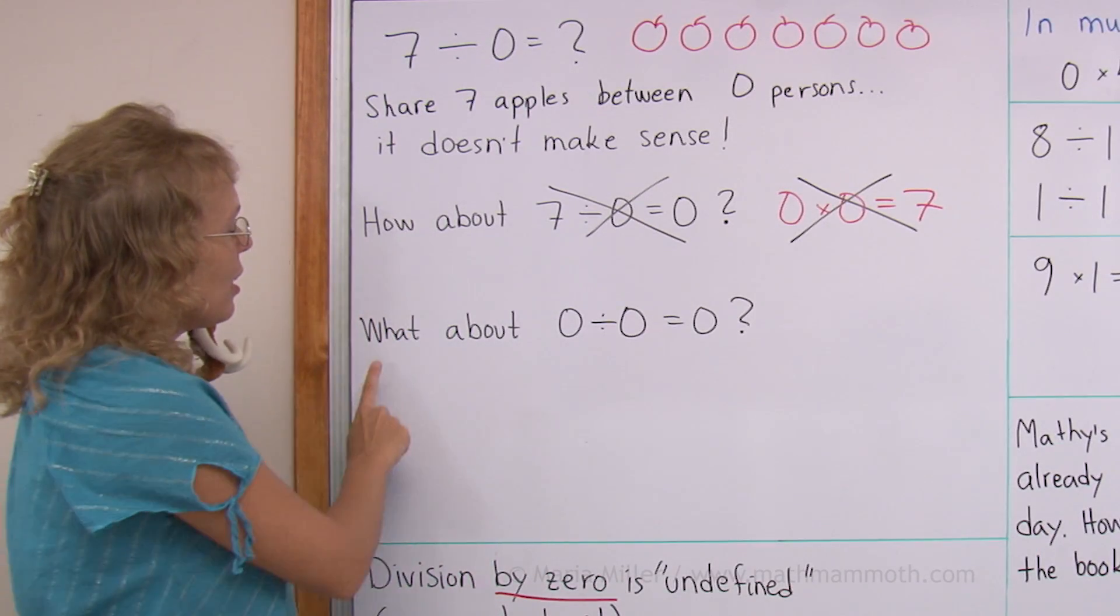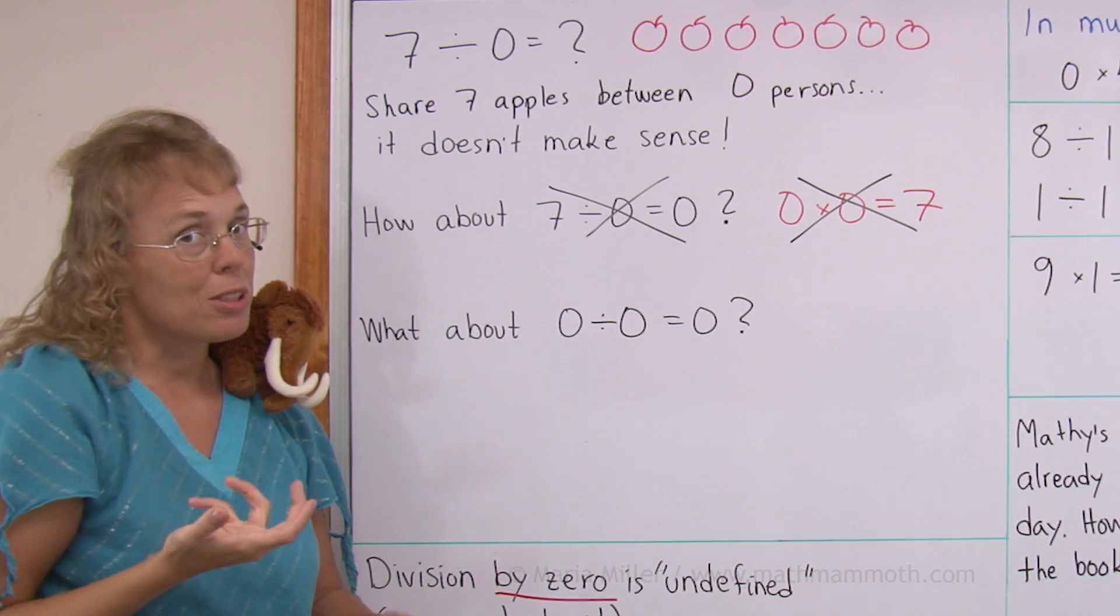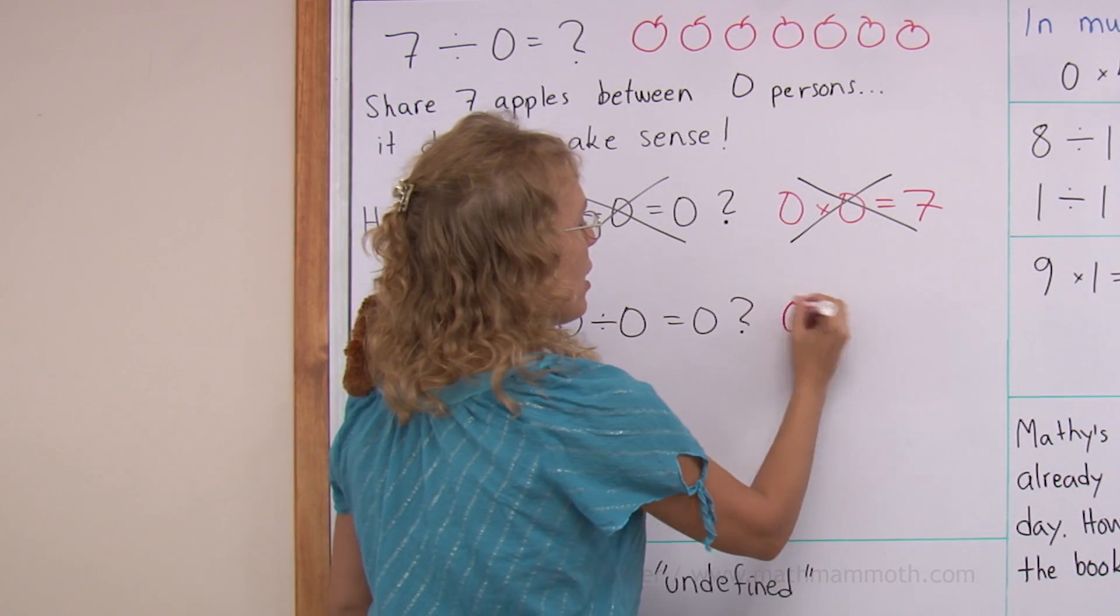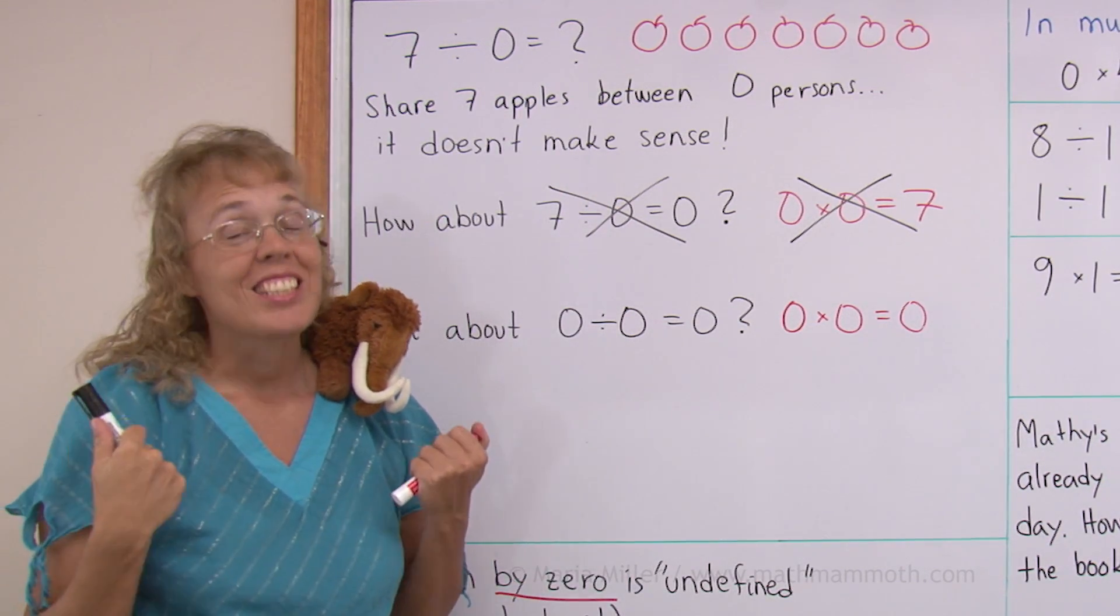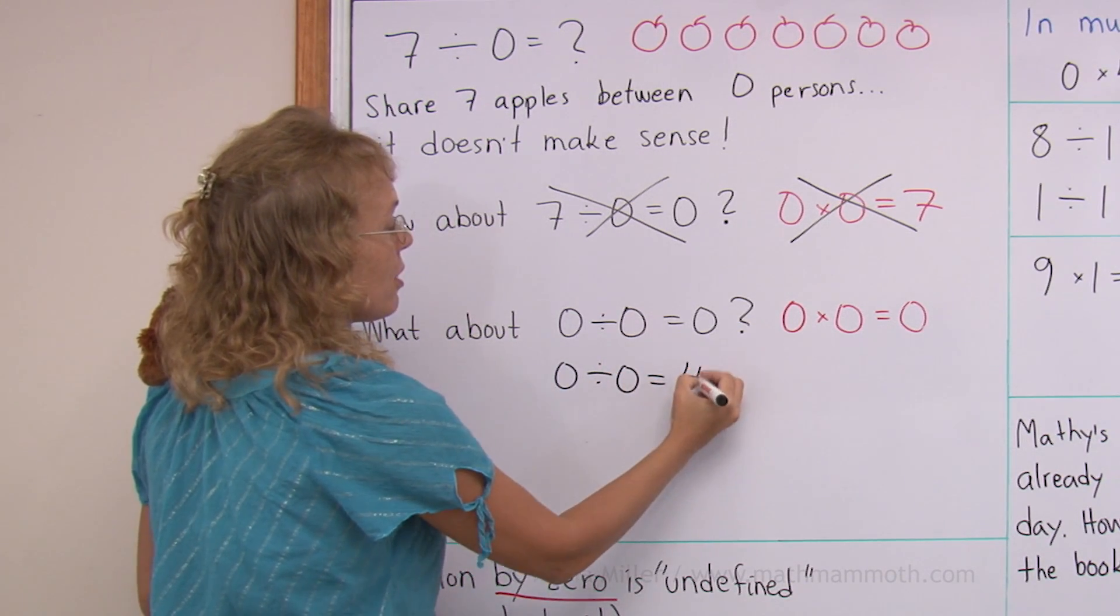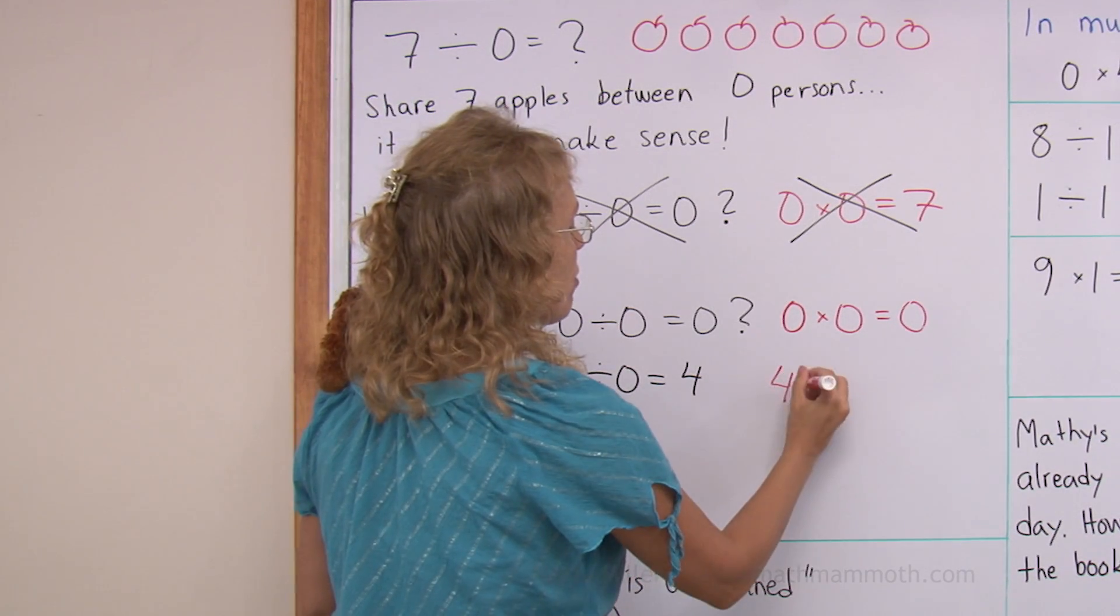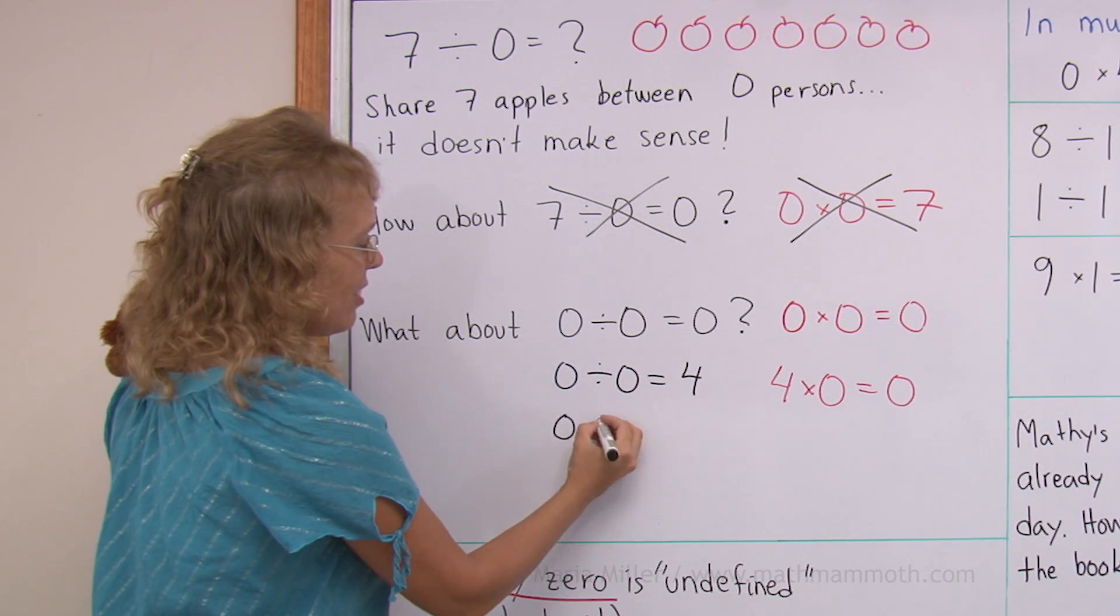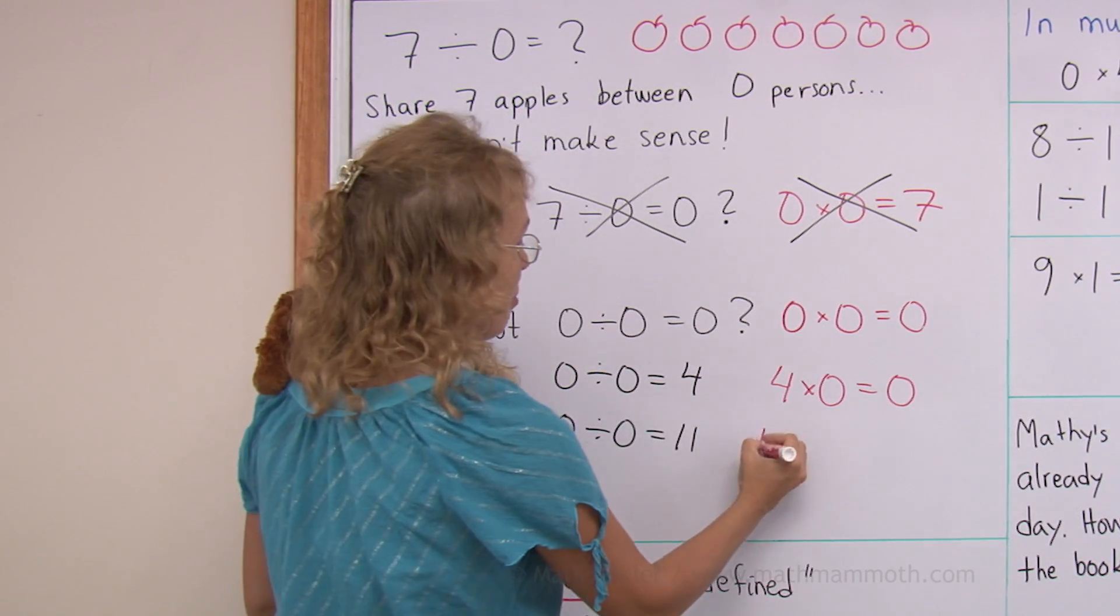One other division. What about zero divided by zero equals zero, right? Would that work just fine? Because zero times zero equals zero, that part would indeed work. But then there is one yet different problem. And that is that actually some other answers would work just as well. If we said that zero divided by zero equals four, that would work too, because four times zero equals zero. Or zero divided by zero, I could say, oh, it's going to be 11. And that answer would work too with the multiplication check.